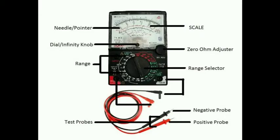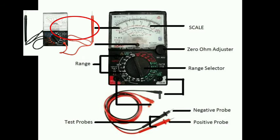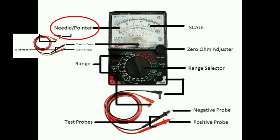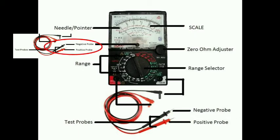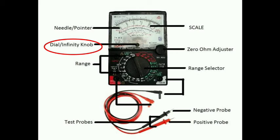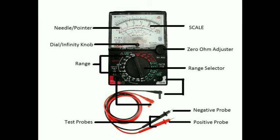And this is the test probe. The test probe: the positive probe is the red one and the negative probe is the black one. I will describe the parts with pictures. The first one is the pointer or needle — it indicates the value read from the scale. The second is the scale — it shows the value of what is being measured. And the dial or infinity knob — it points the needle to zero at the left side of the scale. And the next is the zero adjuster — it adjusts the needle to the right side of the scale.